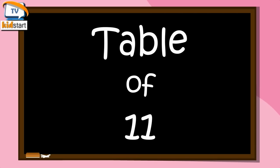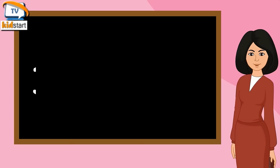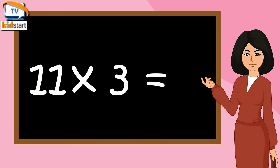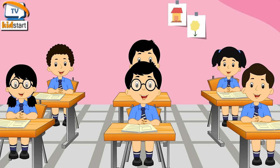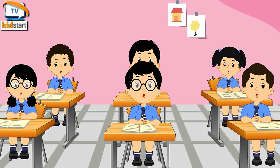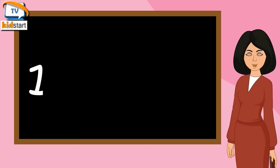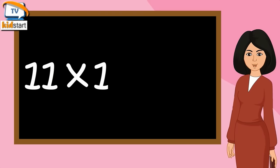Table of Eleven. Eleven ones are eleven. Eleven twos are twenty-two. Eleven threes are thirty-three. Eleven fours are forty-four. Eleven fives are fifty-five. Eleven sixes are sixty-six. Eleven sevens are seventy-seven. Eleven eights are eighty-eight. Eleven nines are ninety-nine. Eleven tens are one hundred and ten.